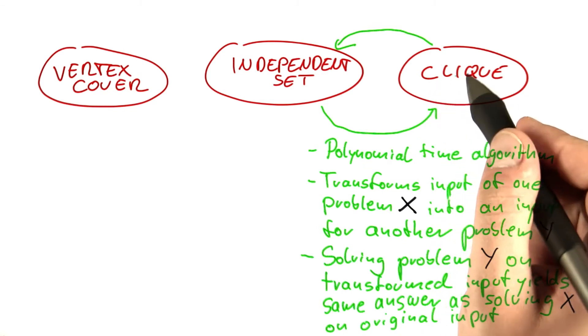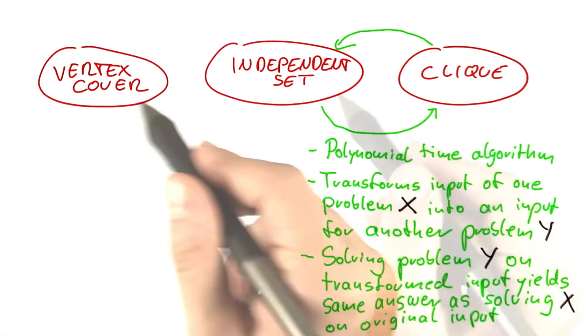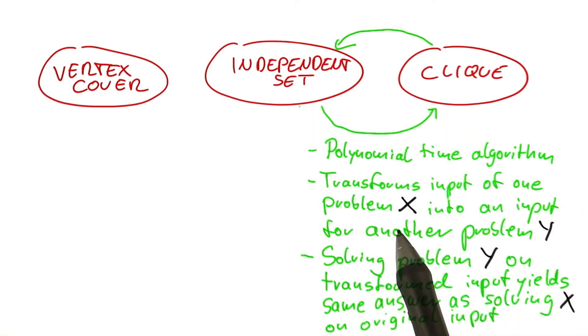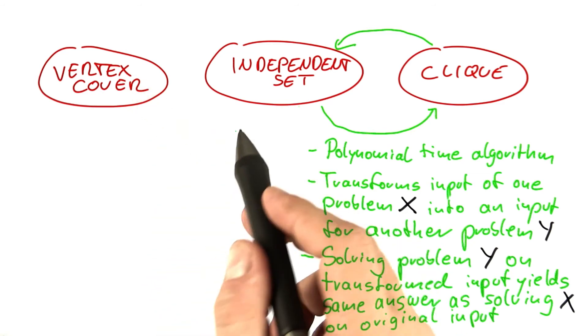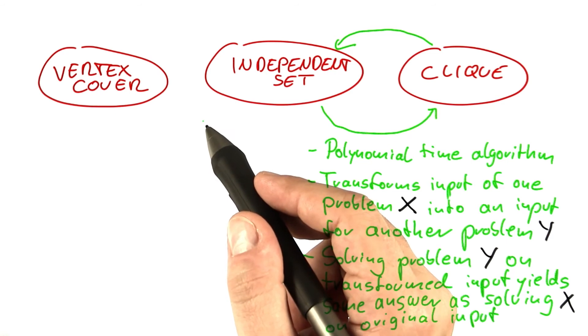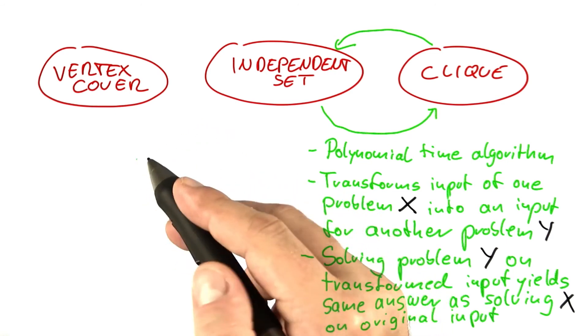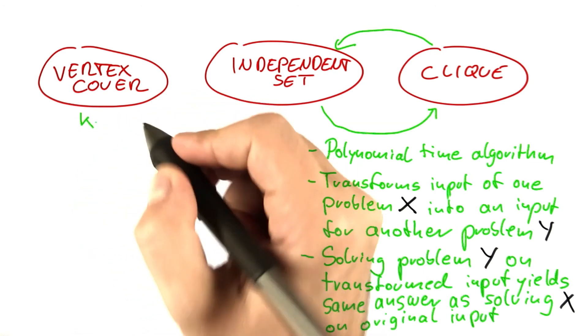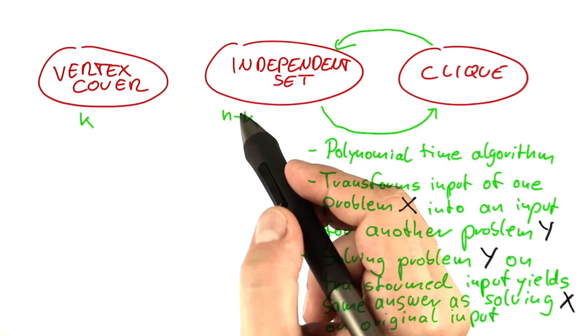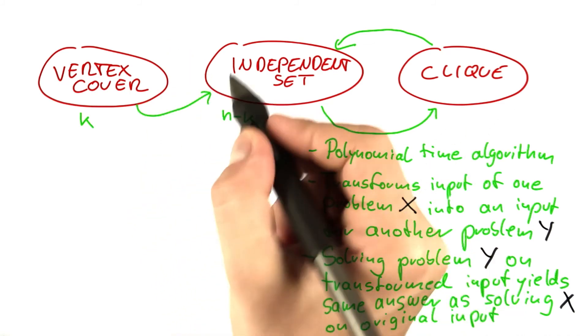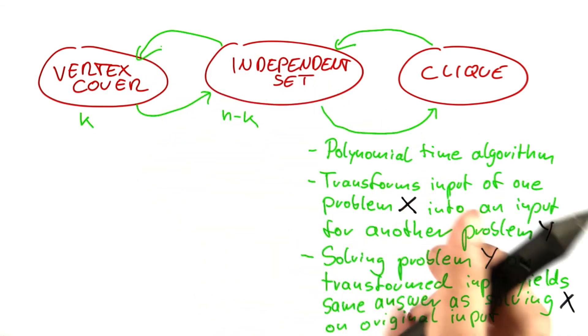And now for vertex cover and independent set, it was even easier because we didn't even have to transform the input. So basically the transformation was we could keep the input as it is. The only thing is if we're working with the decision problem, of course, the answer will be a little bit different. So if we have a vertex cover of size k for a graph with n vertices, then for independent set we must ask if we have an independent set of size n minus k. But other than that, the transformation here is very easy.